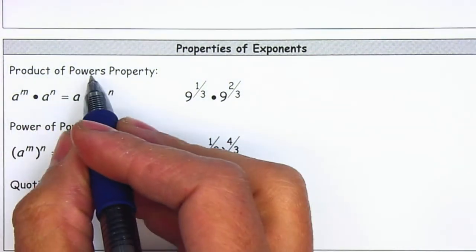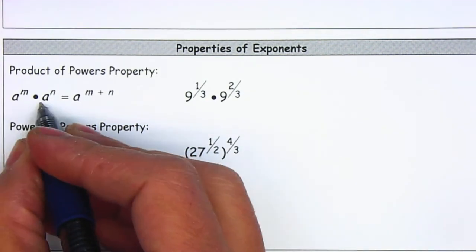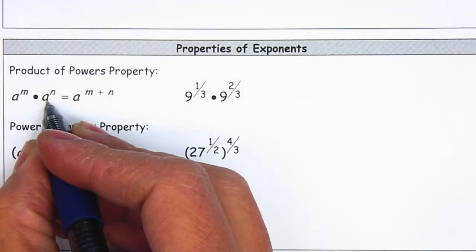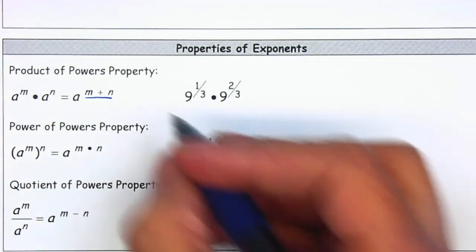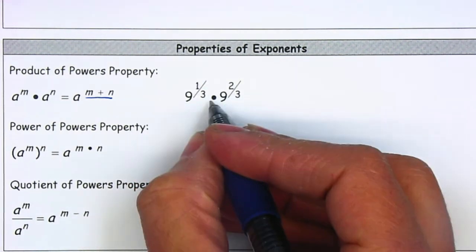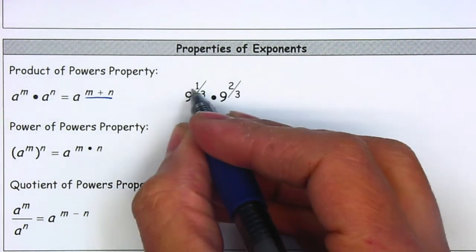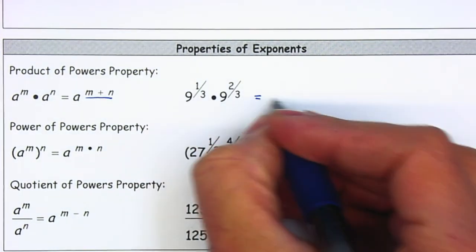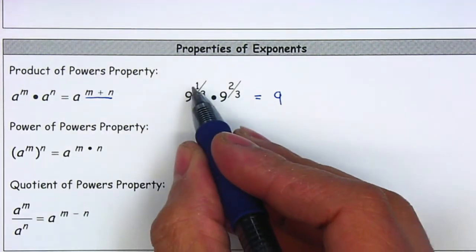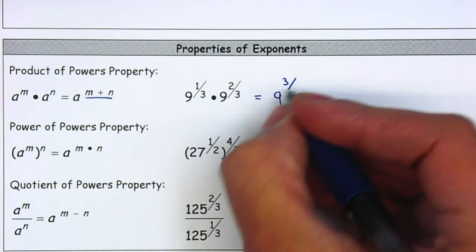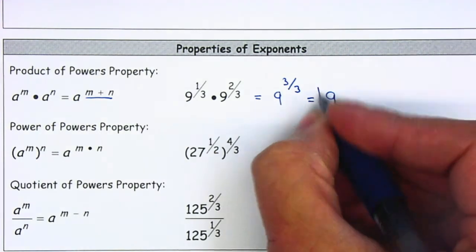The first one is the product of powers property. If we have two terms multiplying and they have the same base, we can just go ahead and add the exponents. So in this case we have 9 to the 1/3 multiplied by 9 to the 2/3. If you notice they have the same base, we're going to be adding the exponents. They have the same denominator, so we can just add 1 plus 2 is 3, and the denominator stays the same. So we just have 9 to the 1 power or just 9.